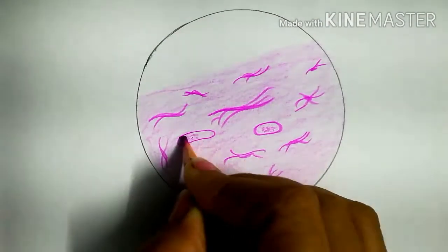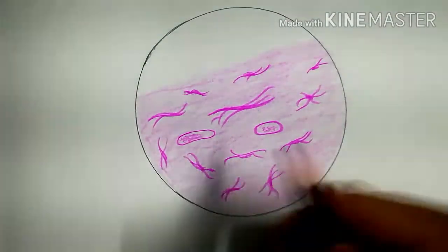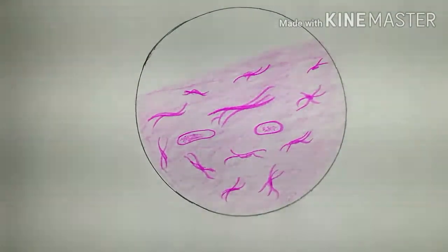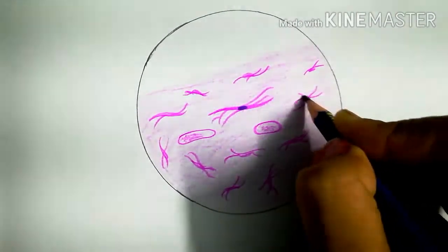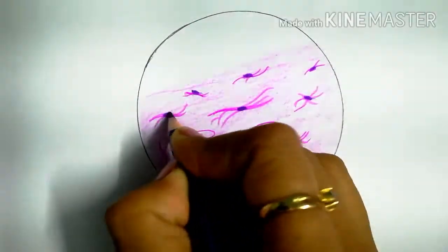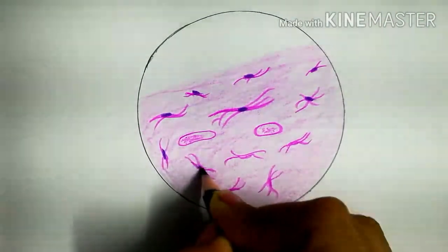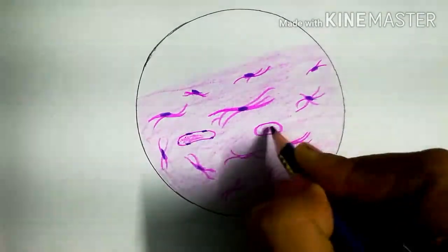In a venule also we can see blood like this. Now we will draw the nucleus, the flat nucleus. Here in the venule and capillary, also this type of nucleus.